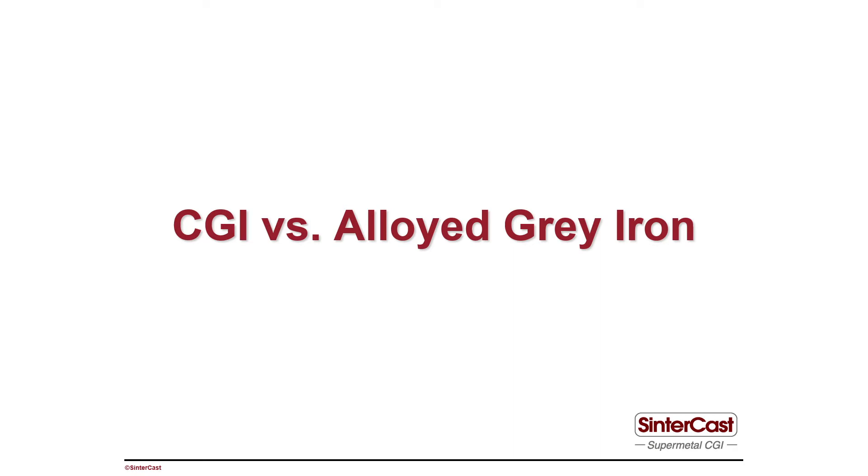In some of the earlier videos in this series, we compared CGI to grey iron. What I'd like to do in this video is to extend that to alloyed grey iron. By alloying, we mean adding elements like chrome or copper or nickel or molybdenum and manganese, either individually or in combination, to increase the strength of the grey iron.